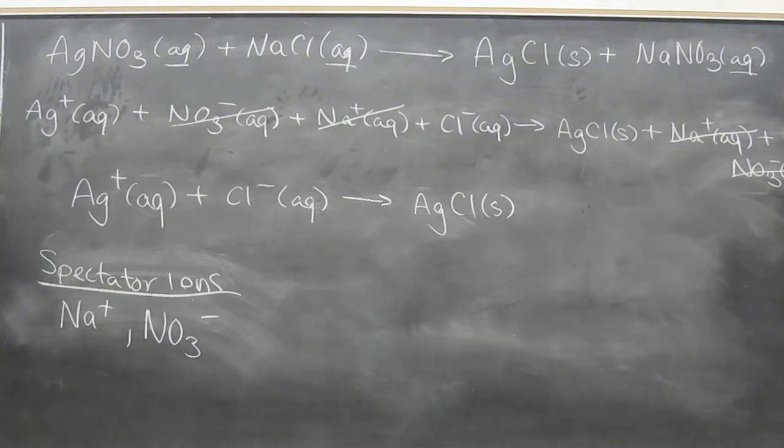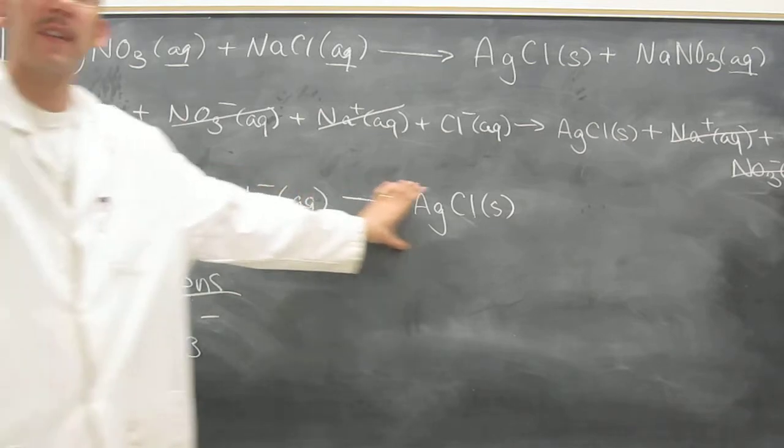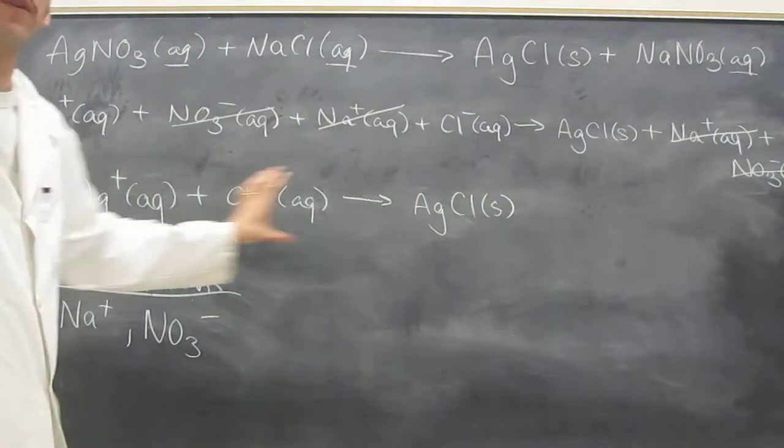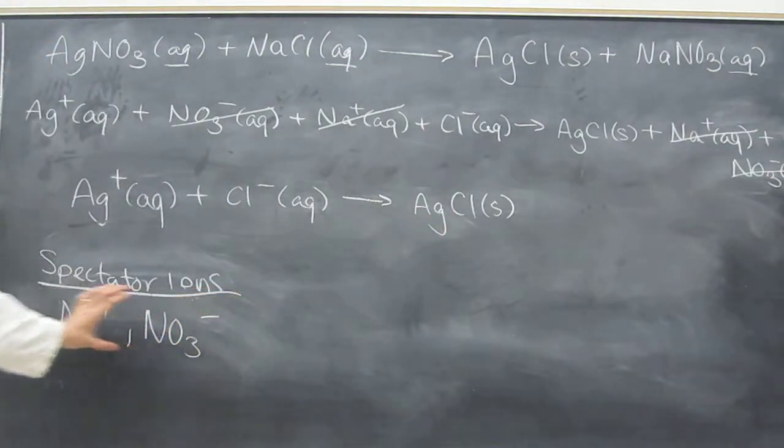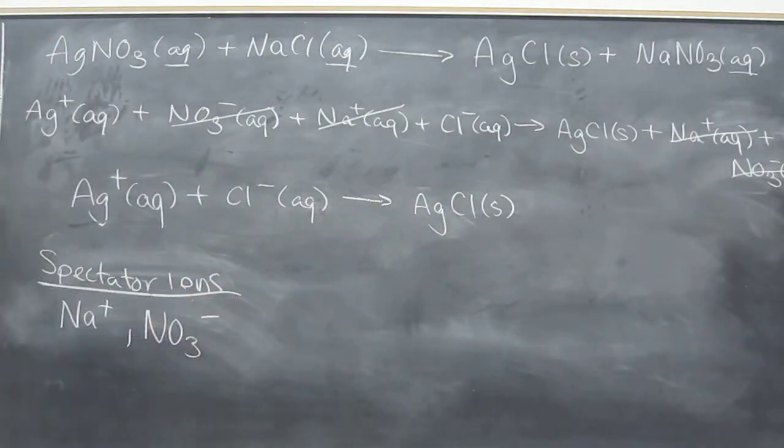And NO3 minus nitrate is always a spectator. So just like in a basketball game or something, there are the participants in the game. Those are the ones that are doing the reaction in our case. And then there are the spectators, the ones that don't participate in the reaction. Does that make sense? Okay, cool.